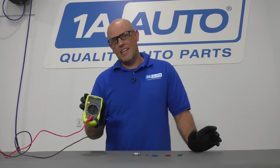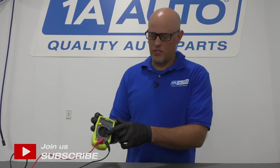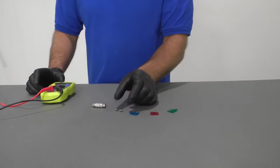How do you test a fuse with a multimeter? It doesn't take an expensive multimeter. You just need one that has resistance on it so you can check the ohms and see if the fuse is open or if it's actually good.